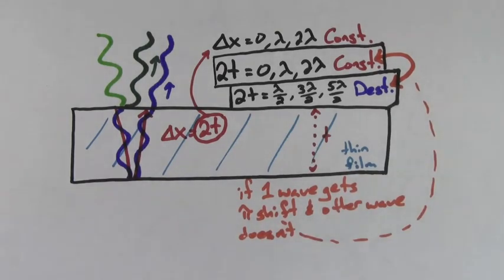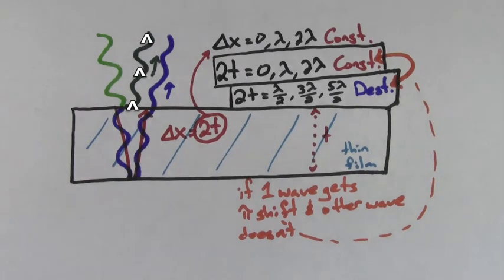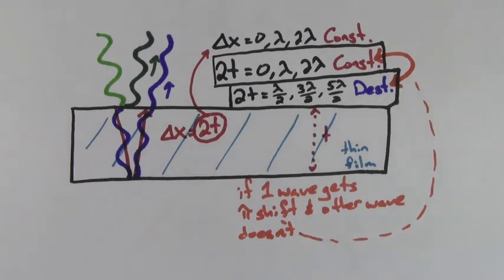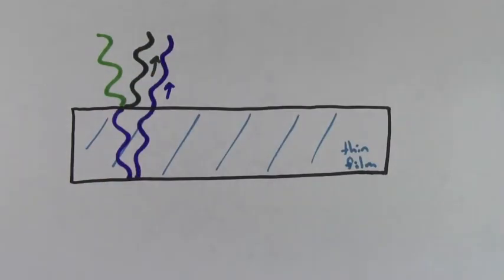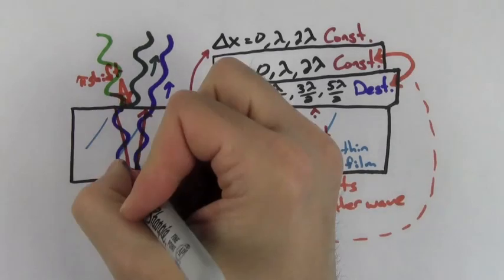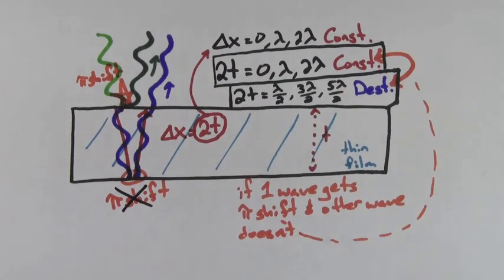For example, if the thin film is a piece of plastic surrounded by air on each side: the wave reflecting off the top of the thin film reflects off a slow material (light travels slower in plastic than air), so it receives a pi phase shift. The wave reflecting off the bottom reflects off a faster material (air is faster than plastic), so it does not receive a pi phase shift. Overall, there is a relative phase shift between the two waves — one gets a pi phase shift and the other does not — so we must reverse the interference conditions.